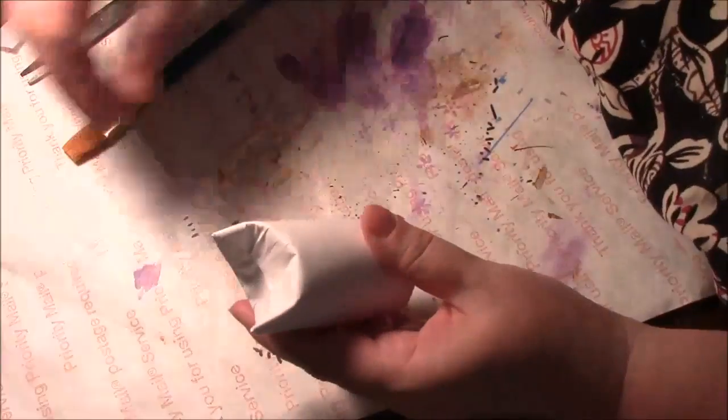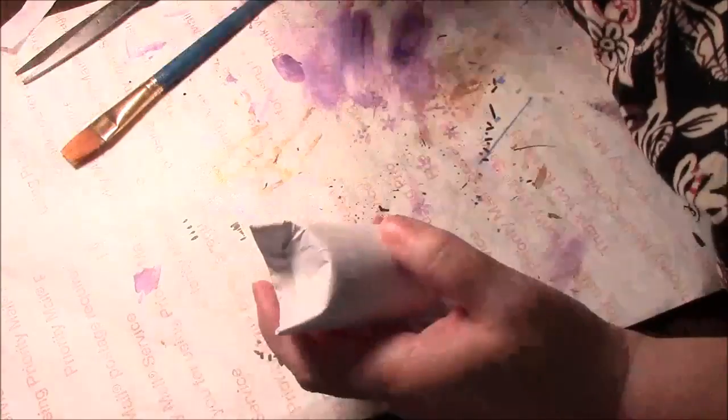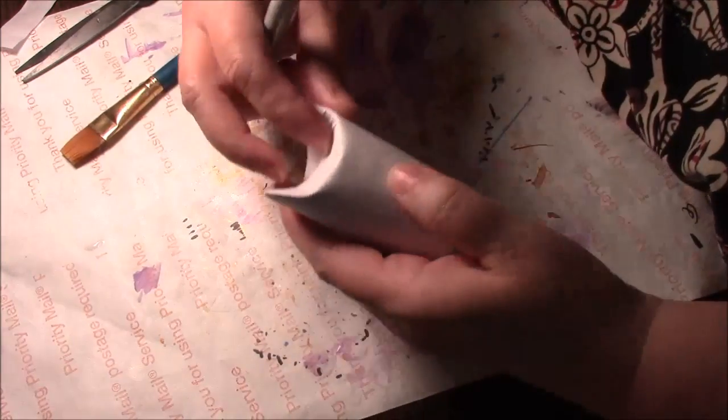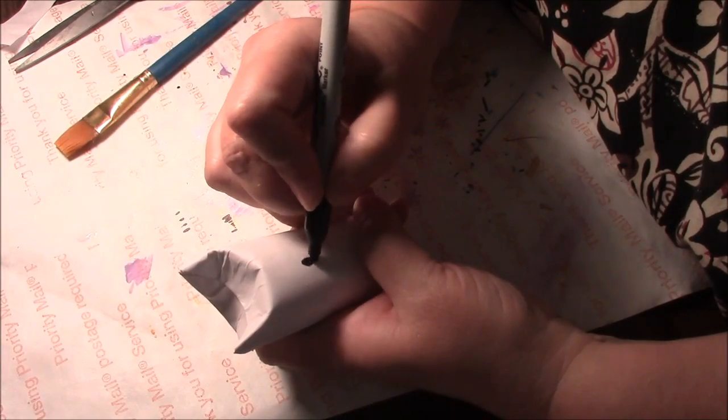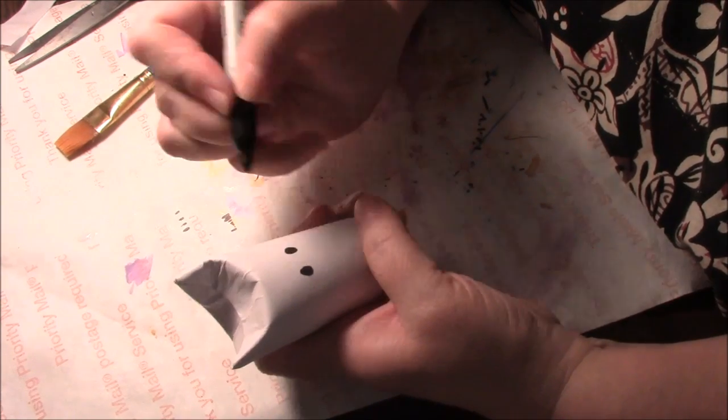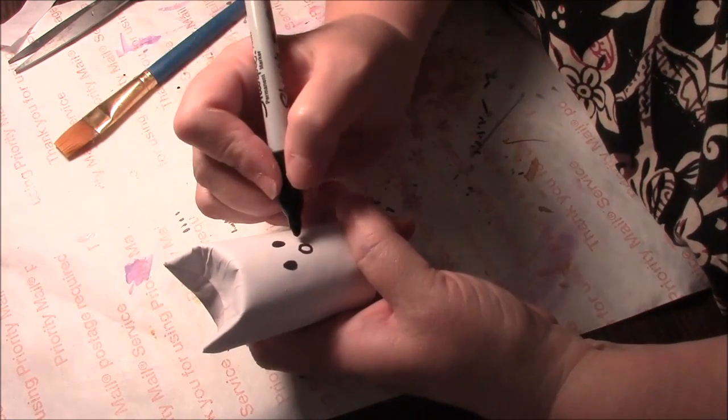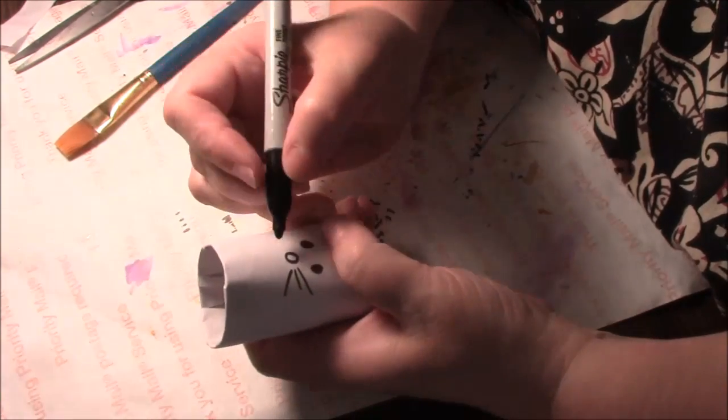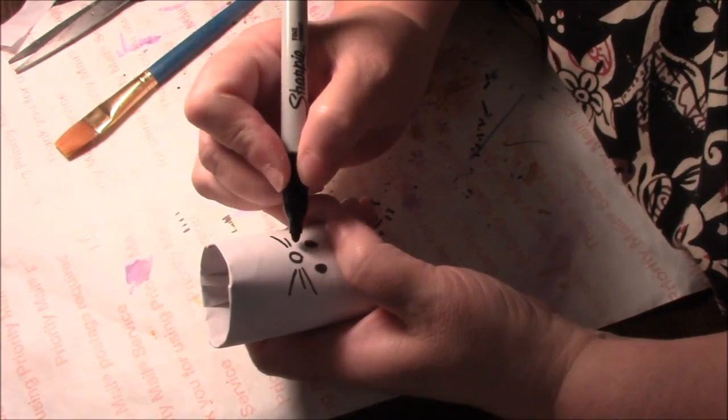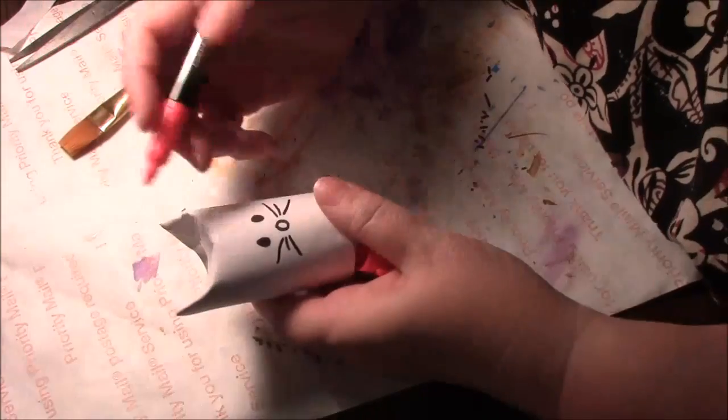Now we're going to do some very simple drawing. I need a black marker, I always use permanent. You can use what you want. We're just going to make two circles for eyes, or little ovals, or whatever you want to do. A little circle for a nose and some whiskers.